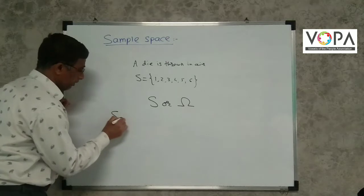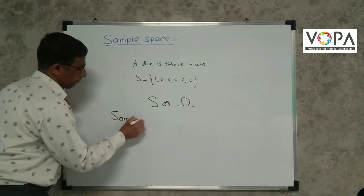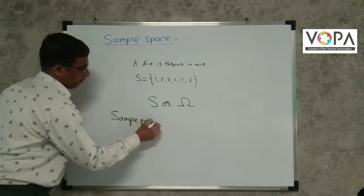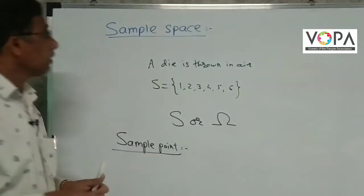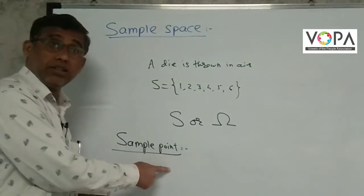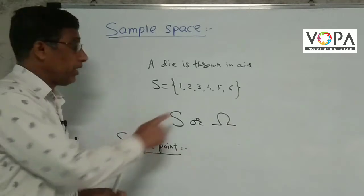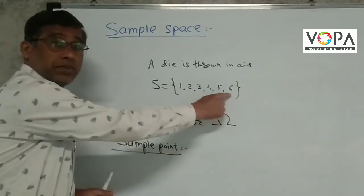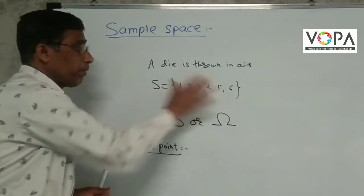Now we take sample point. Each element of a sample space is a sample point. These are the elements of a sample space, so this is a sample point.